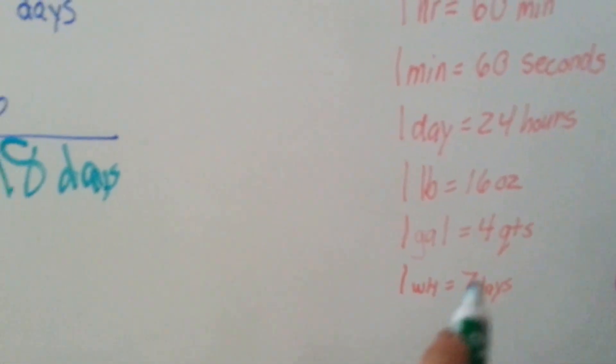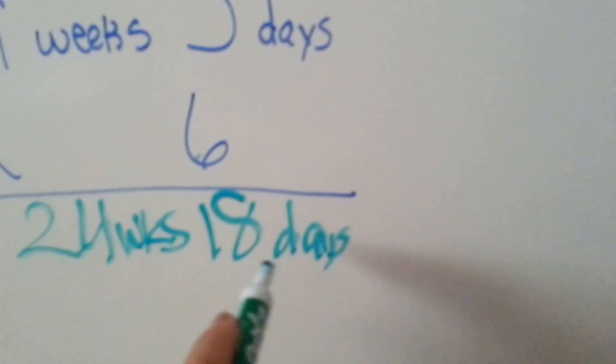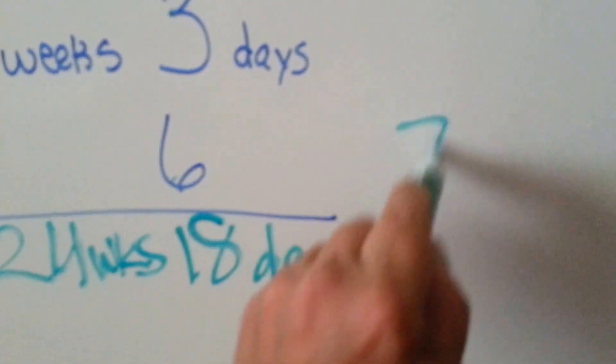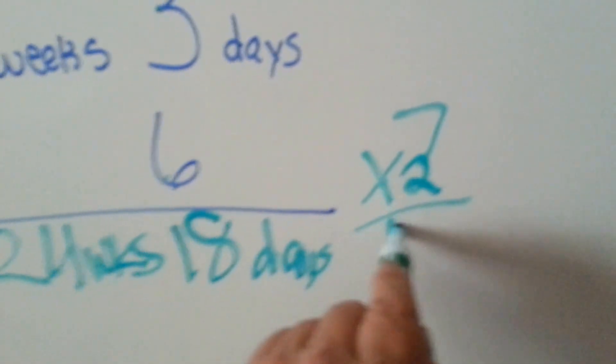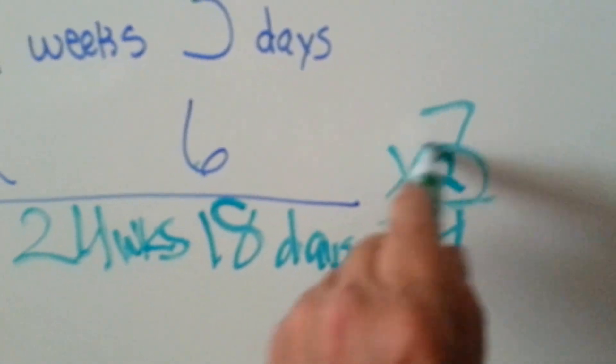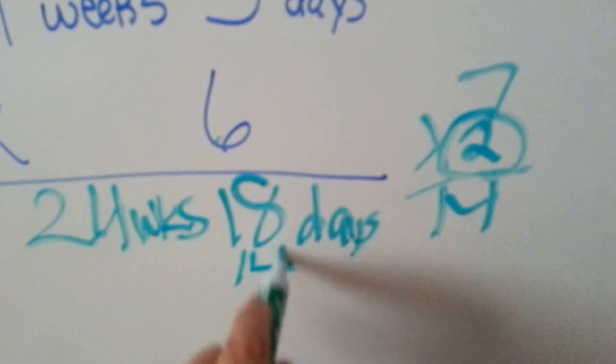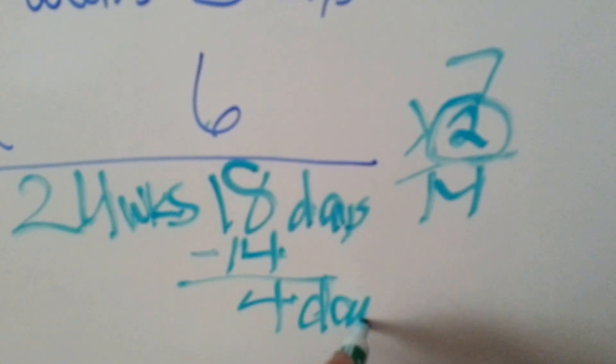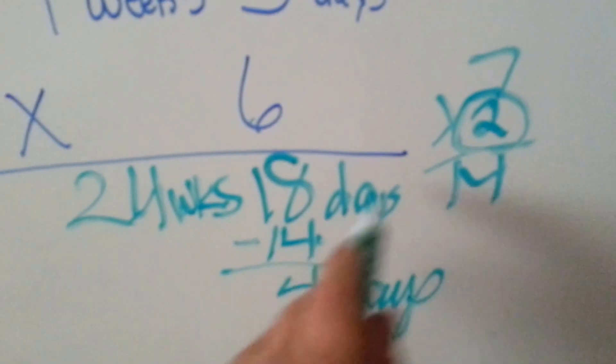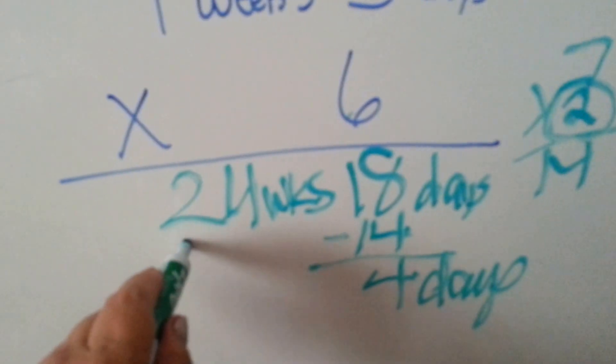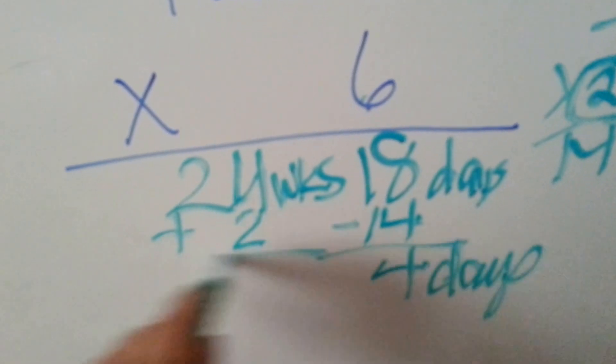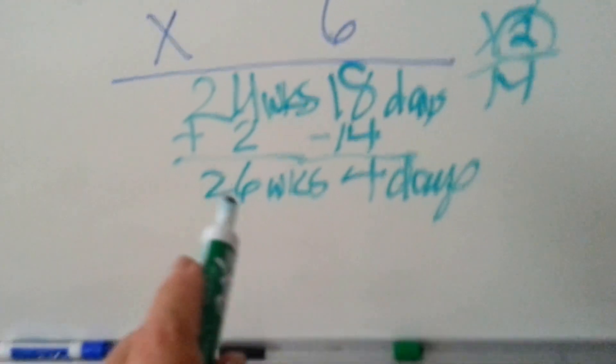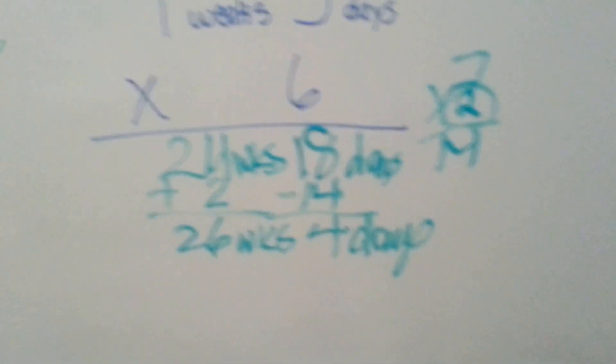How many weeks can we get out of this to put it over here so that it's regrouped correctly? Well, we know that there's 7 days in 1 week. So we know we can take more than 1 seven out of here. 7 times 2 is 14. So that's 2 weeks. Let's take the 14 from the 18 and we get 4 days. And then those 2 weeks get added to the weeks over here. So our answer is 26 weeks and 4 days.